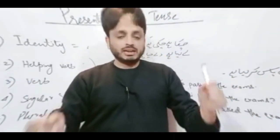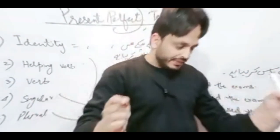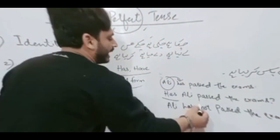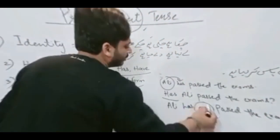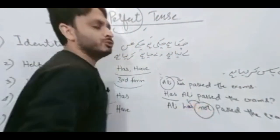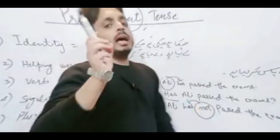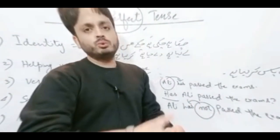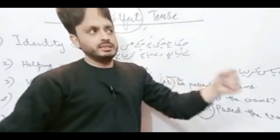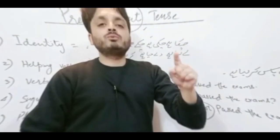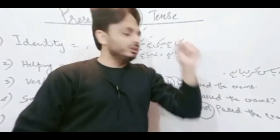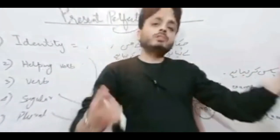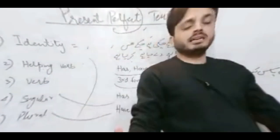For making negative, remember that you have to add only 'not' with your respective helping verb — whatsoever helping verb you have in that tense: has, have, do, does, did, is, am, are. You have to add only 'not' with your helping verb, whatever tense it is.